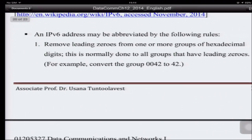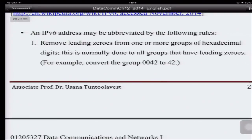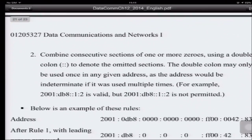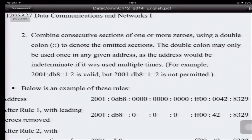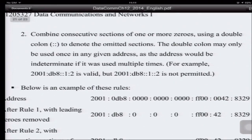The first abbreviation rule is to remove the leading zeros from one or more groups of hexadecimal digits. This is done for all groups that have leading zeros. For example, a group that is 0042 — we omit the first two zeros and write it as just 42.